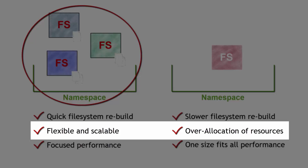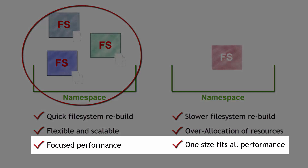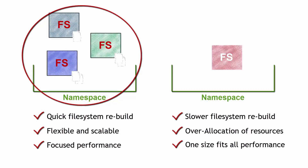Often in network attached storage there is a problem with over-allocation — you have to feed that single file space with a whole bunch of disk. The preferred model is multiple file systems making up one namespace. That way you can be flexible and scale your storage to your own business requirements. Because they're individual file systems, you can focus performance on specific types of services, whereas a single file system is a one-size-fits-all scenario, which simply doesn't work in today's fluid environment.